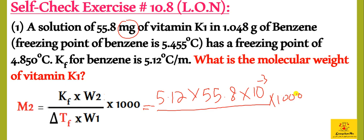Del Tf is the depression in freezing point. Freezing point of benzene is 5.4 and the solution freezing point is 4.8. So Del Tf is 5.4 minus 4.8, and we proceed with the calculation.